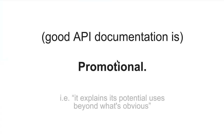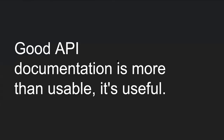Finally, good API documentation is promotional. This includes linking and exposing opportunities — think web links, connecting articles, documents, and other information. It means explaining usages and pricing options, pointing to integrations, third-party libraries, and SDKs, and raising awareness about related communities. Good API documentation is more than usable — it's useful. It is not simply technically correct instructions, and if you take one thing from this talk, that's it.